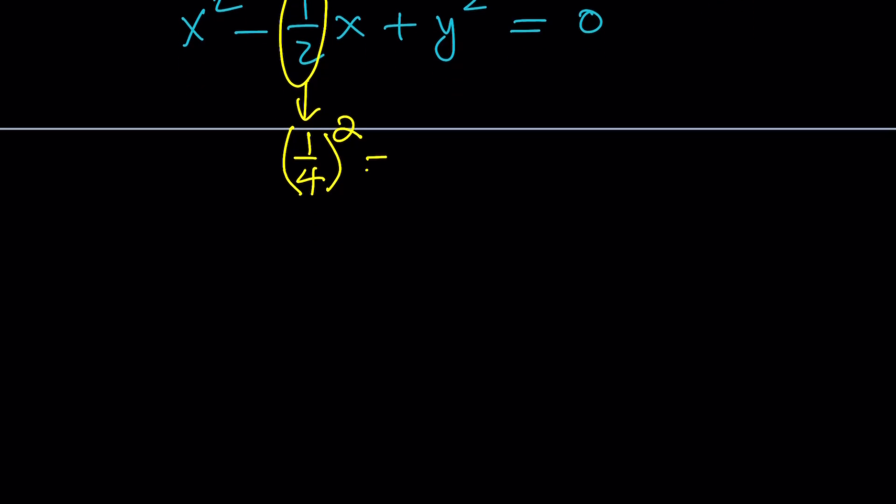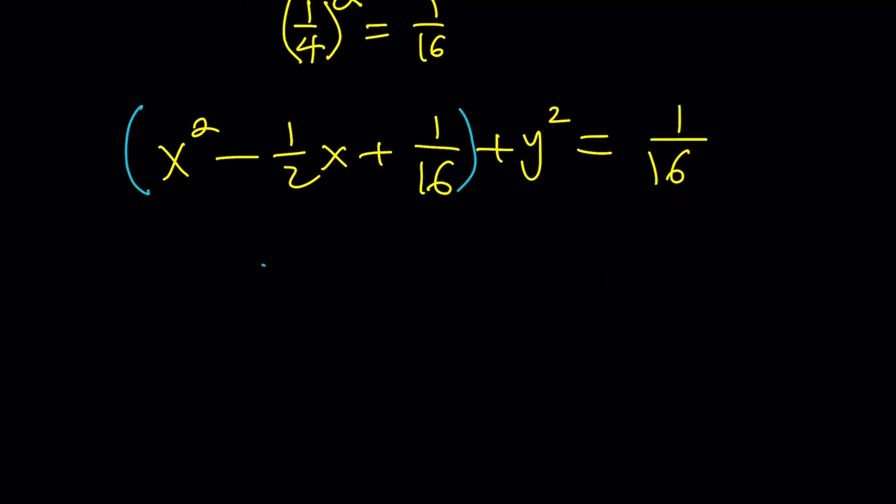That's the number you should add to complete the square. So I do need to add 1 over 16. And guess what that gives me? If I add 1 over 16 to both sides, and of course, you have to add it on both sides. Be very careful about that. You do get a perfect square here. And that is x minus 1 over 4 squared.